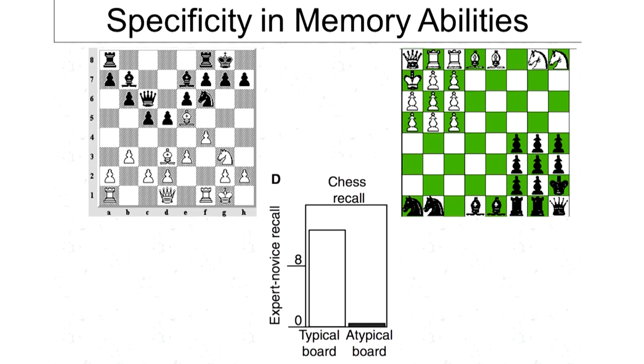But what they later found is that if you put those chess pieces down on a regular chess board in some random order rather than an order that looks like a real chess game, chess experts don't actually do any better. Their advantage is very specific to the board looking like a regular chess game. If you change it so it doesn't look like a chess game anymore, they have no advantage.